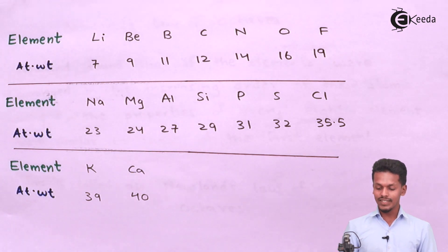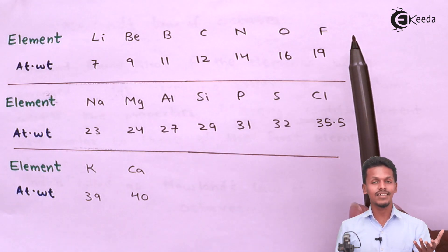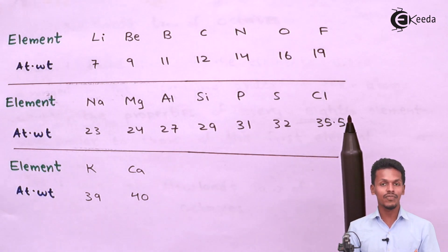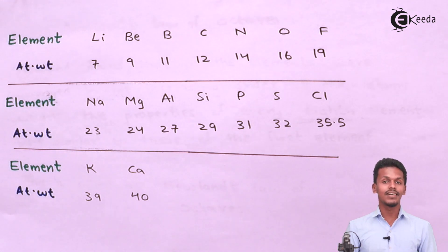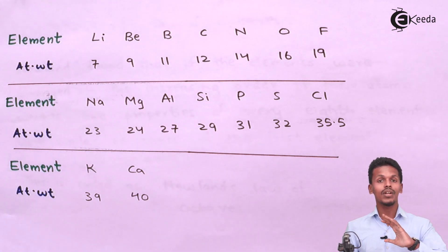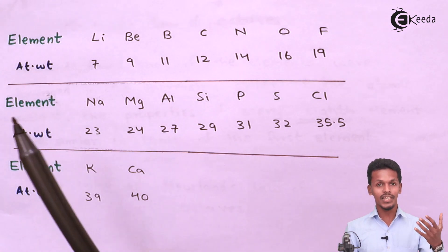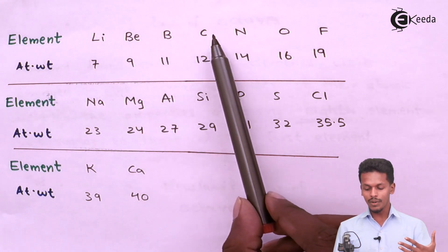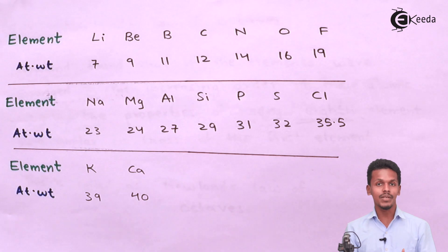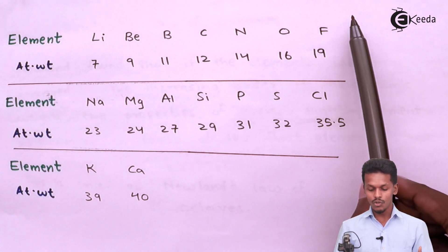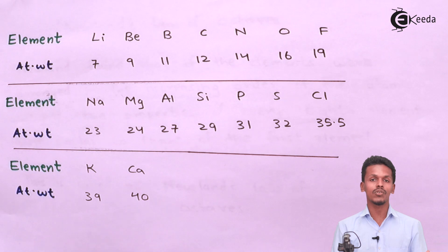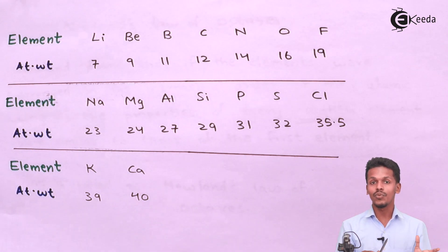We don't observe helium, neon, or those kinds of noble gases because Newland's octave is only applicable till calcium and not applicable to noble gases. In the periodic table, after lithium, beryllium, boron, carbon, nitrogen, oxygen, fluorine, a noble gas appears. But Newland's octave is not validated for noble gases, which is one of its limitations.